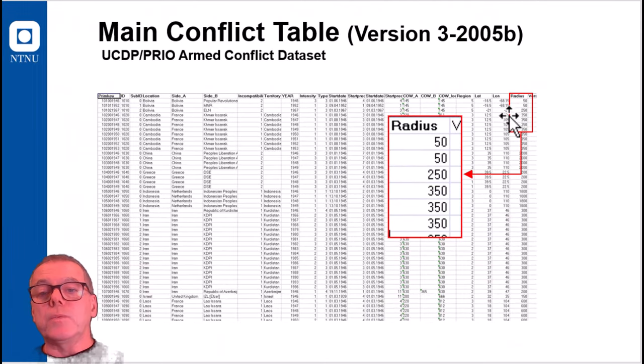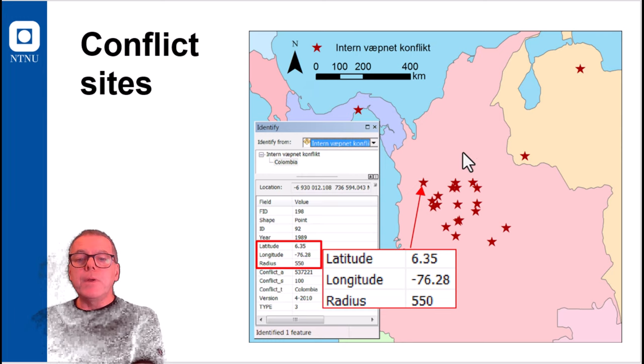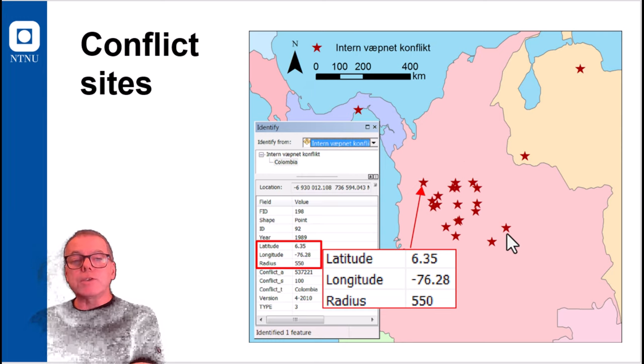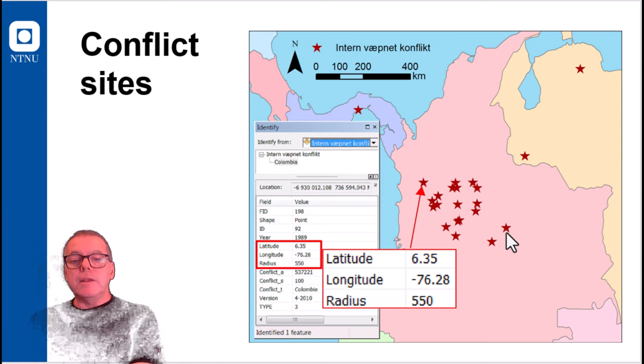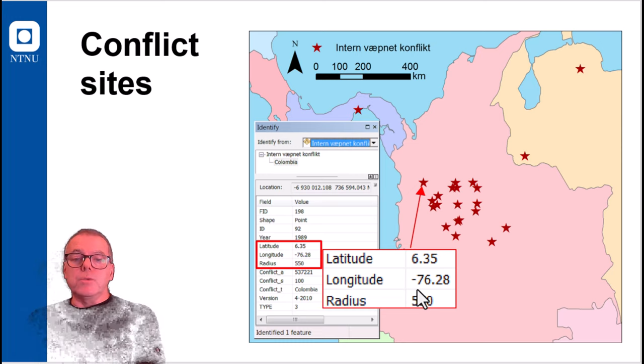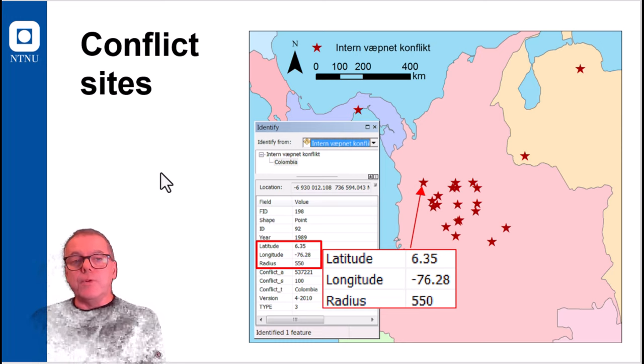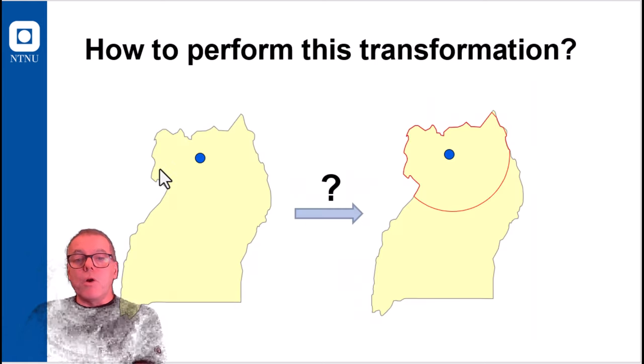Thus here we had what we need for a varying buffer distance, a field in the attribute table which we can use to vary the buffer distance for the objects. So this was how it looked in the map. We had all these central points for the armed conflicts for the different years, and a radius value showing the extensions of it.